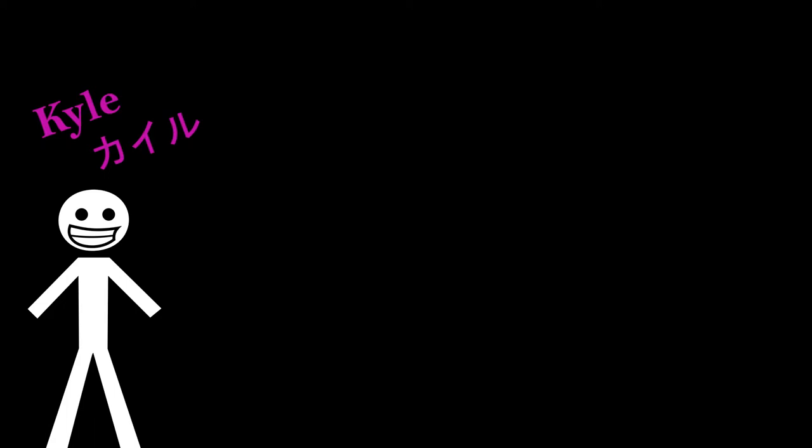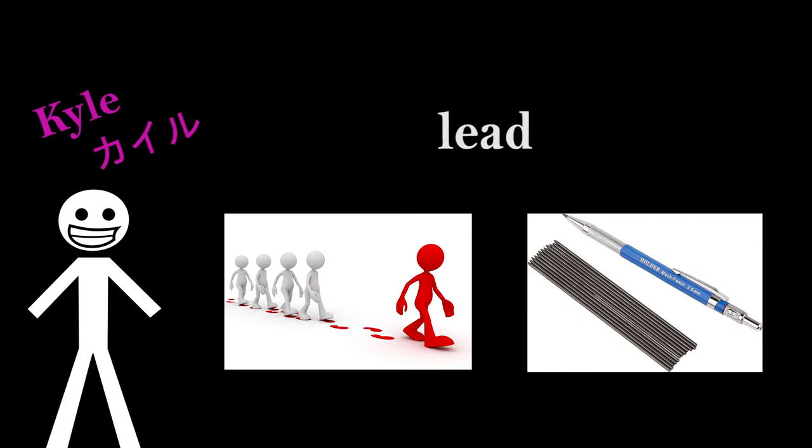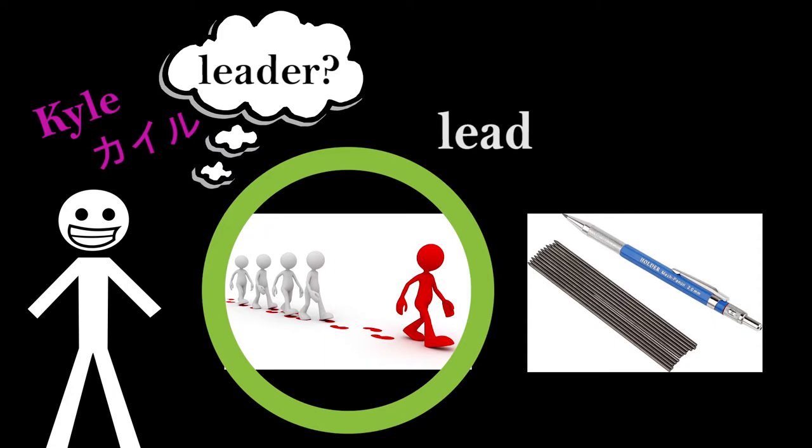Take this English word, for example. What word is this? Some of you might see lead, as in a leader. Or maybe you thought of lead, as in a pencil. Both words are spelled the same way, so since you had no context, your brain picked the connotation that you favor and decided it was so.